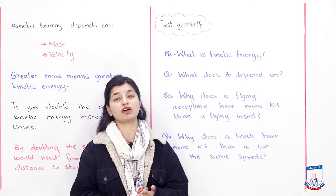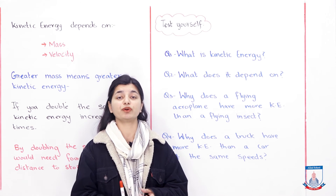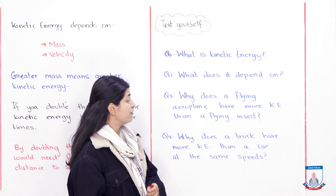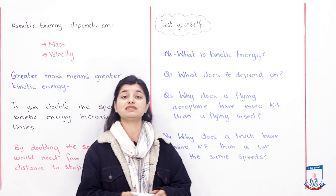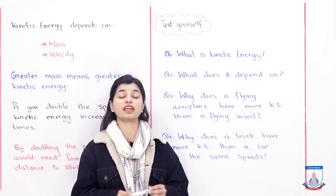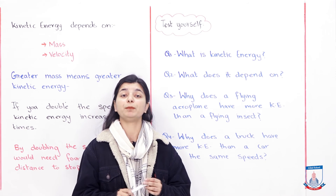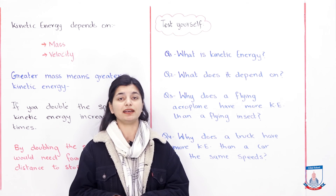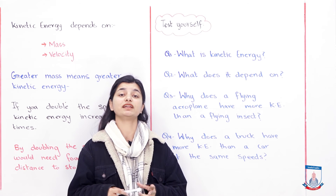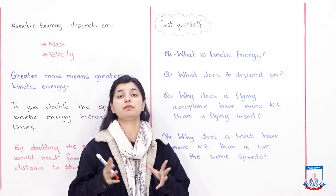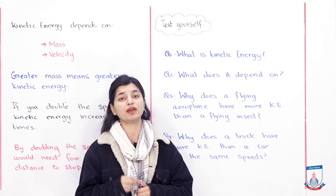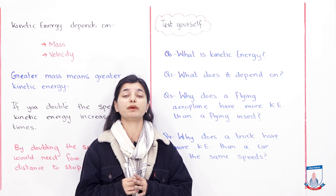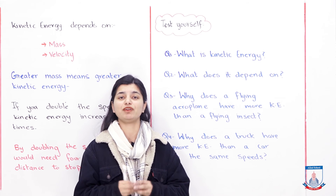The greater the amount of mass, the greater the kinetic energy. The greater the amount of velocity, the greater the kinetic energy. Question 3: Why does a flying aeroplane have more kinetic energy than a flying insect? Because the aeroplane's mass is more and its velocity is higher. Kinetic energy is dependent on mass and velocity, so when you have a flying aeroplane, there is a lot of kinetic energy because of its great mass. The insect's mass and velocity are both very low, so its kinetic energy comparatively is very low. Do take help from your textbook and answer this in a really nice way.